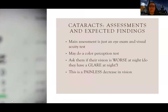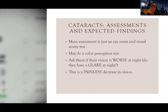For assessment, the main tool is just an eye exam — a visual acuity test. There's not a lot of diagnostics for eyes. Just knowing the basics of what eye exams we might do is as far as you need to go. We may also do a color perception test, because the cloudiness and protein clumping on the lens can lead to a decreased ability to differentiate colors. We want to ask specific questions characteristic of cataracts — such as whether their vision is worse at night or if they feel like they have a glare at night, since that can be a specific sign.